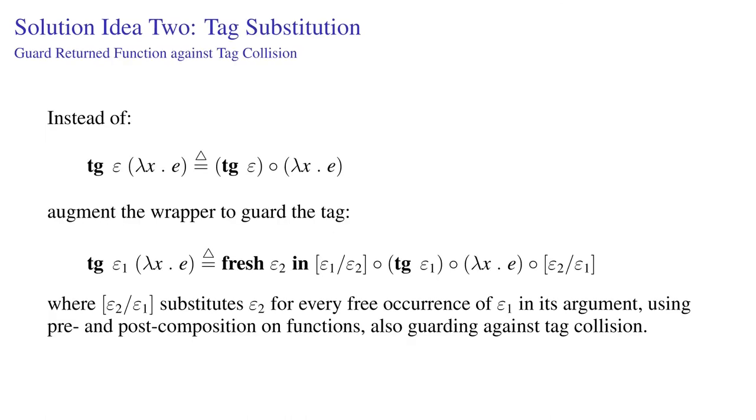Here's another idea. What's going wrong is that the value passed into the function whose tangent is being taken might have the same tag that's in play in that function. So we could augment it with a wrapper to guard the tag in the function so that if it occurs externally, the external one gets renamed away and then renamed back after being passed through.